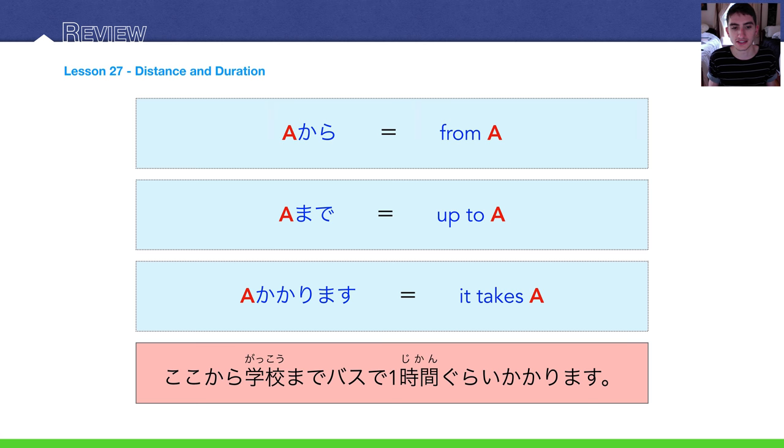The key sentence for that lesson was koko kara, gakkou made, basu de, ichijikan, gurai, kakarimasu. This is a lot. Koko, here, kara, from. So, from here. Gakkou, school, made, up to, up to school, to school. Basu is bus, de, so by means of bus.